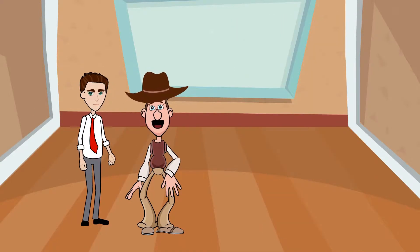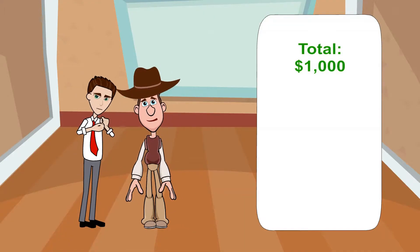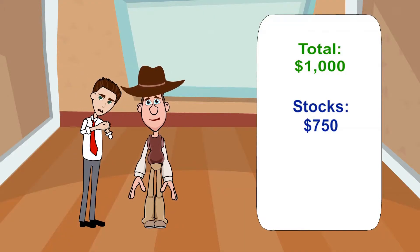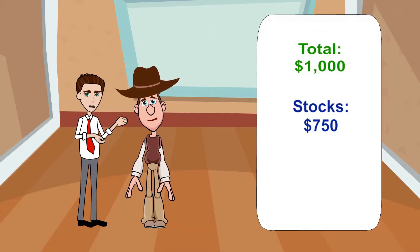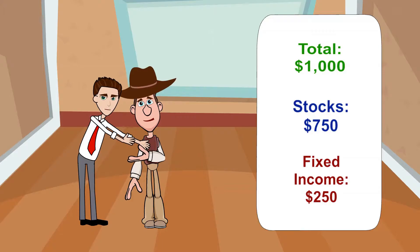Can you give me an example of that happening? Sure, if you have $1,000 to invest, you can invest 75% ($750) in stocks and 25% ($250) in fixed income.